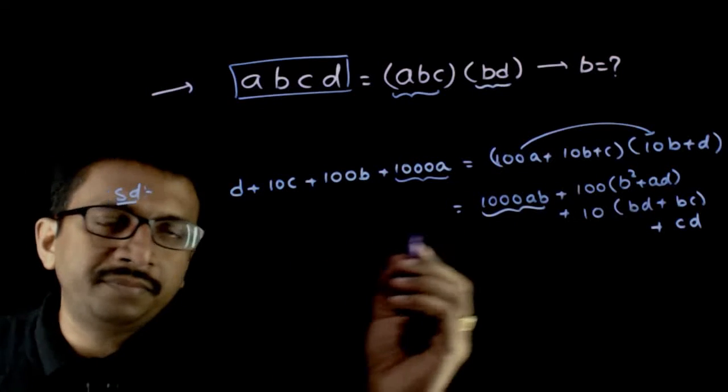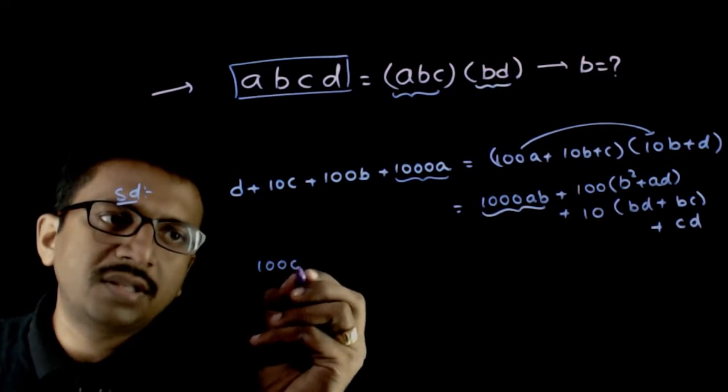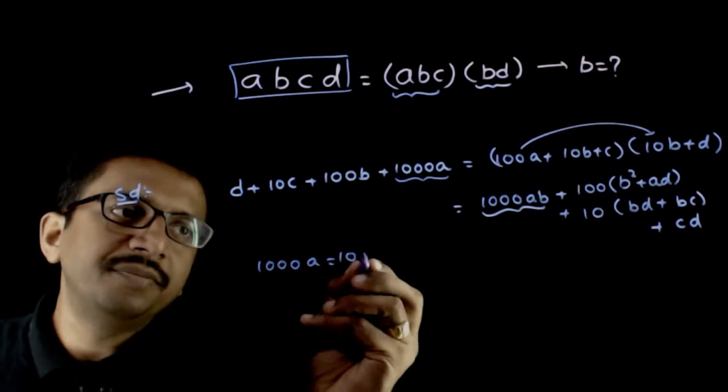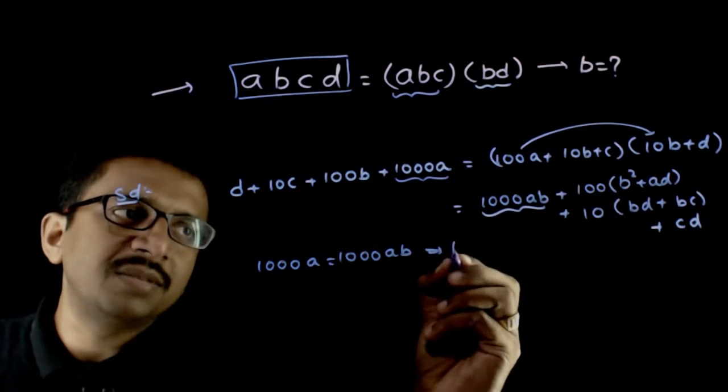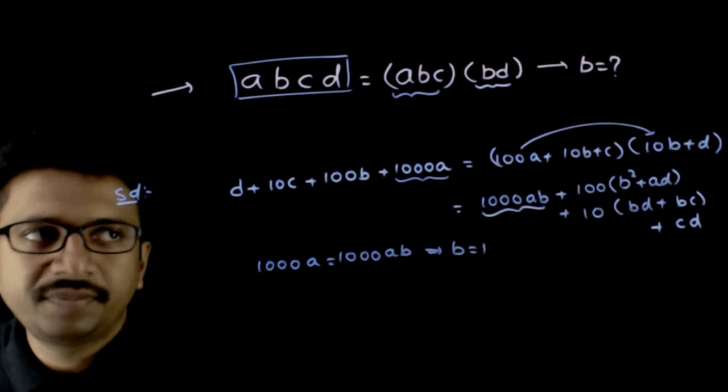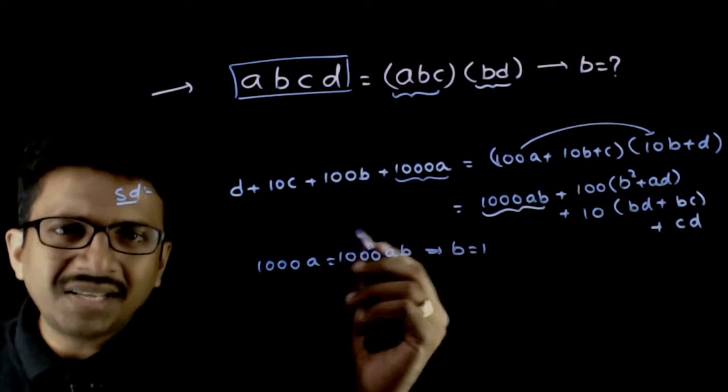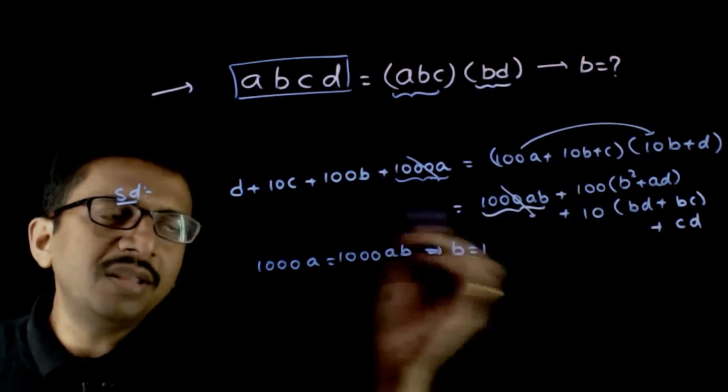1000A should be equal to 1000AB. This implies B has to be equal to 1. If B is equal to 1, these two are same.